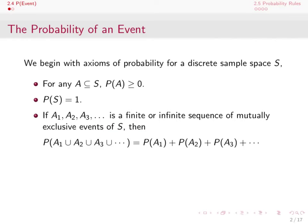We'll start with axioms of probability for a discrete sample space S. The first is that for any A which is a subset of S, the probability of A is going to be non-negative, meaning we should never compute a probability and get a negative number. The second axiom is that the probability of S occurring is equal to 1. The third axiom states that if we have A1, A2, A3, and so on, which are a finite or infinite sequence of mutually exclusive events of S, then the probability of their union is equal to the sum of their individual probabilities.